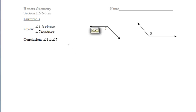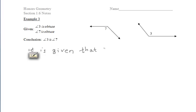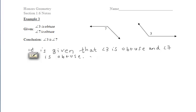To continue our notes on section 1.6 paragraph proofs, we'll start with example 3. It is given that angle 3 is obtuse and that angle 7 is also obtuse. We want to write down our given information and then think about how we want to reach our conclusion. What we want to conclude is that angle 3 is congruent to angle 7.